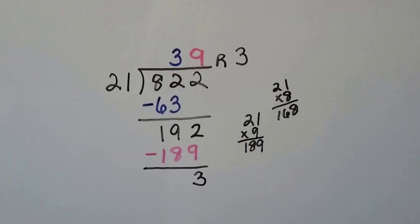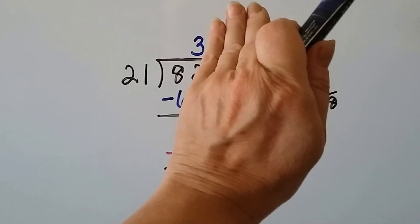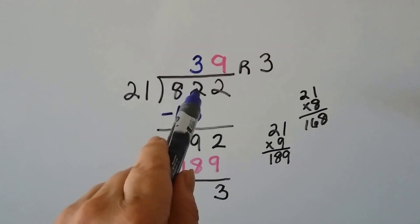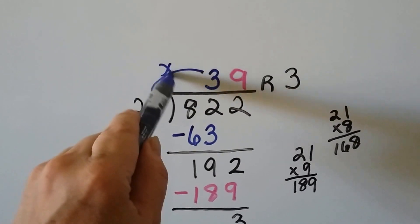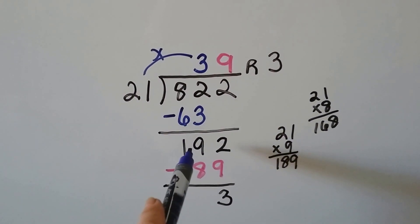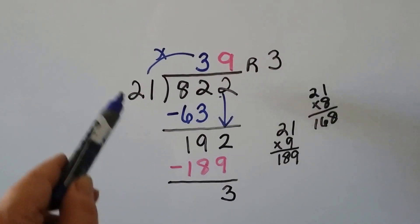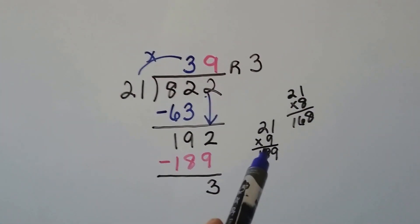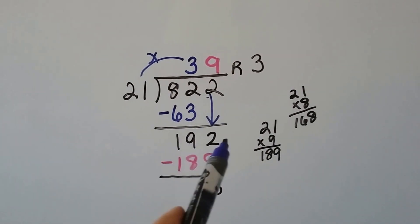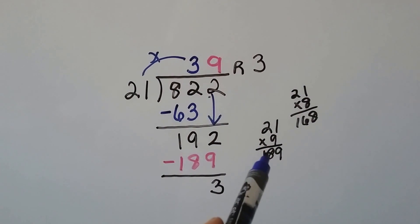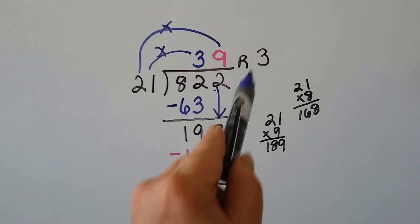Let's try going one step bigger — fitting 21 into 822. 21 can't fit into 8, so we're not putting our answer there. 21 fits into 82 three times; 21 times 3 is 63. We subtract and get 19. Now it's the 2's turn to come down. 21 can't fit into 19, so the 2 comes down. 21 goes into 192 — we try 21 times 8 is 168, 21 times 9 is 189, which is the closest to 192. So 21 times 9 is 189; we subtract and get a remainder of 3.